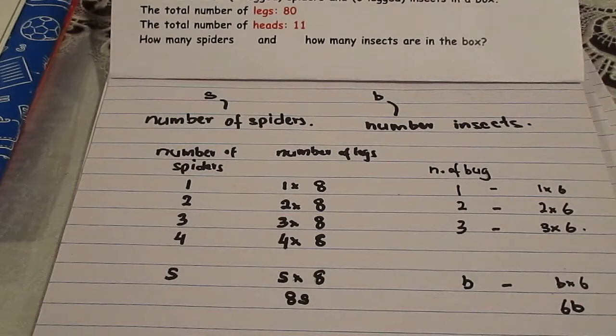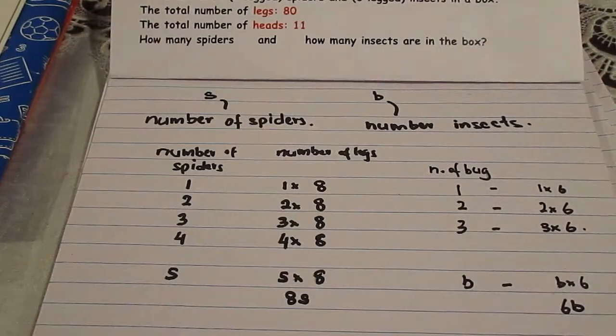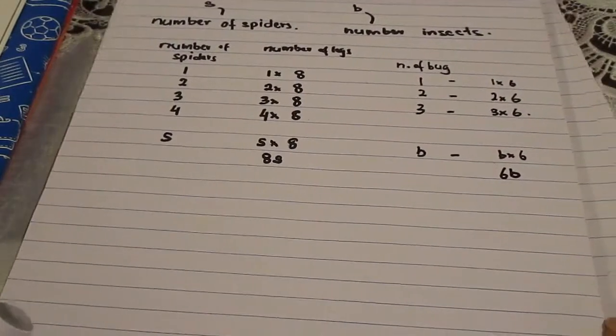Now I can't stress this enough. The number of bugs is b. The number of legs the bugs will have if there are b bugs is 6b. Let's move further down.